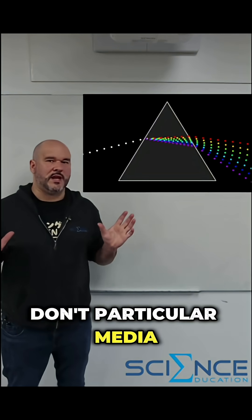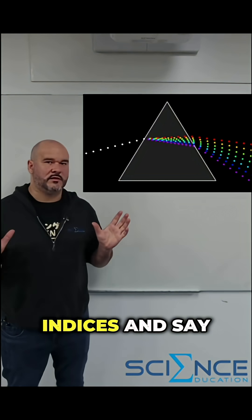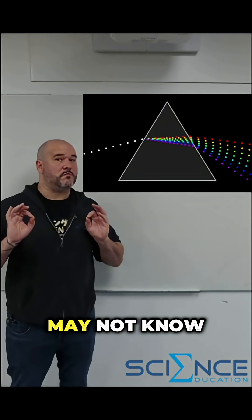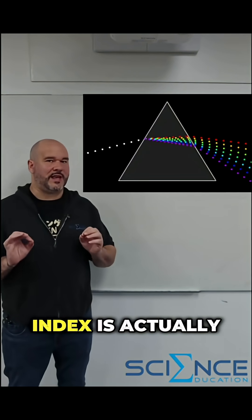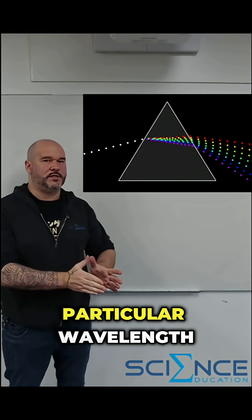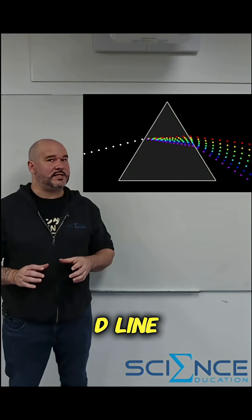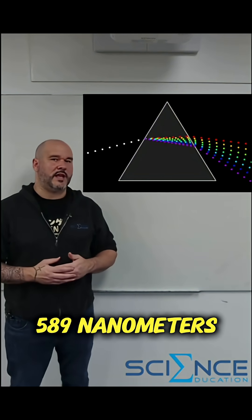Don't particular media have different refractive indices? And say for a glass prism that refractive index is constant. Now what you may not know is refractive index is actually defined at a particular wavelength and that is the refractive index at the sodium doublet d line which is about 589 nanometers.